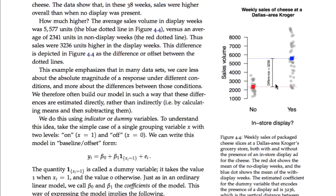Here's the idea of a dummy variable. There are two ways we could imagine encoding the information in this plot. One is to simply quote the two group means — the red dot for the no-display weeks at about 2,300–2,400, and the blue dot for the yes-display weeks at about 5,600. The second way is to report the no-weeks group mean of 2,300 and then report the difference of 3,236. You're reporting the same information, just in a different form — here's the red dot, and here's the offset that the blue dot is from the red dot.